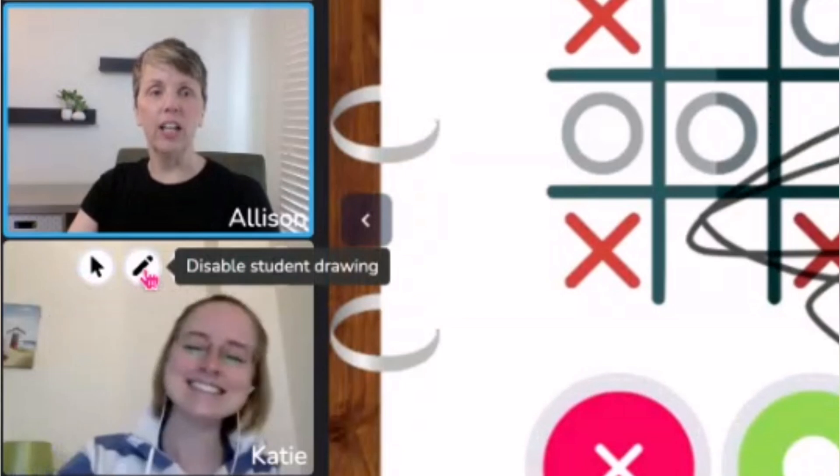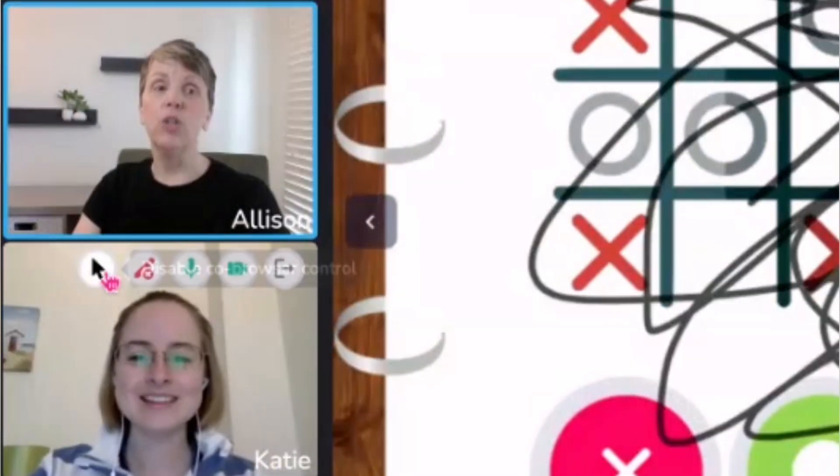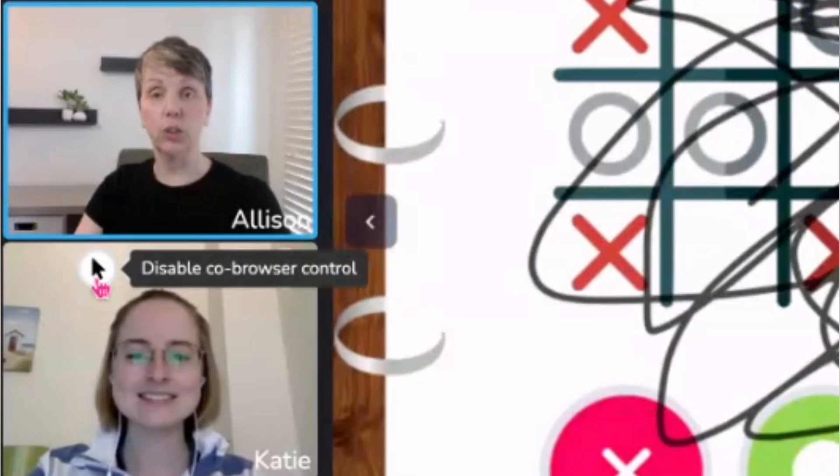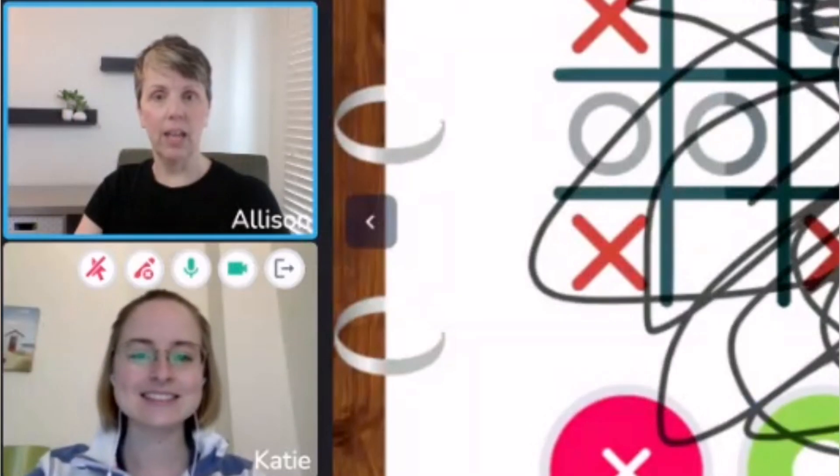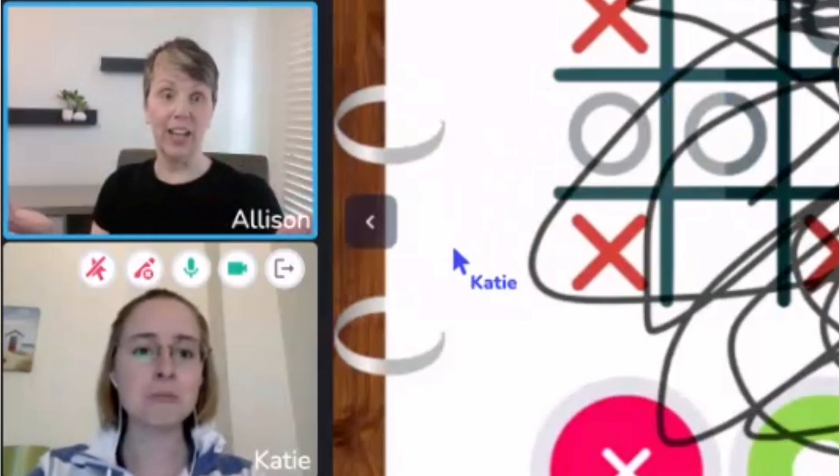So I want you to notice above Katie's head in her image. First of all I'm going to click disable student drawing. You can disable the co-browser control completely which I'm going to do right now and Katie can no longer use the co-browser at all.